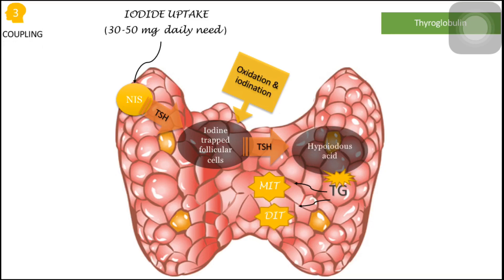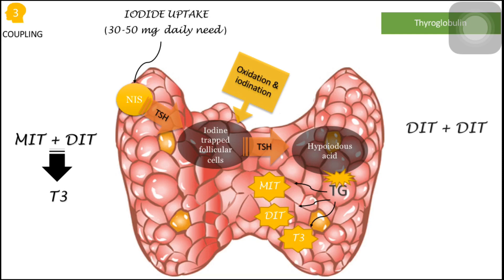The third step is coupling. One molecule of monoiodothyronine and one molecule of diiodothyronine couple to form T3, and two molecules of diiodothyronine couple to form T4. Thus, thyroglobulin produces four types of molecules: monoiodothyronine, diiodothyronine, triiodothyronine, and tetraiodothyronine, which are T3 and T4.